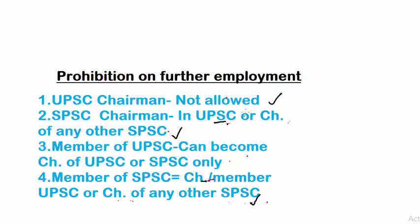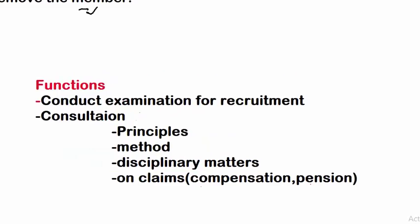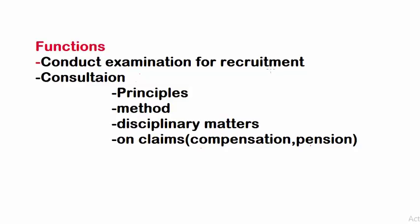For members of State Public Service Commission, they can either become the chairman or member of Union Public Service Commission, or the chairman of any other State Public Service Commission. Members of UPSC and SPSC cannot take employment in government service — they can only be part of a commission. This has been done to maintain their independence.